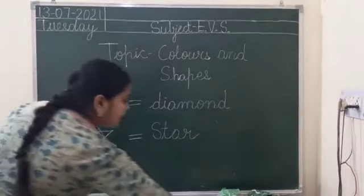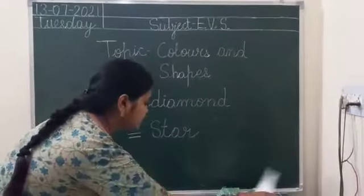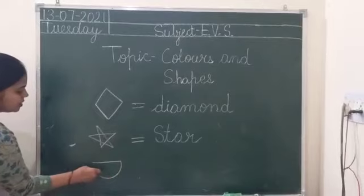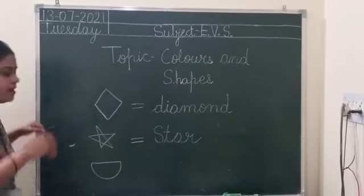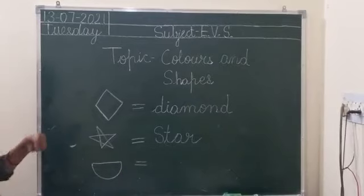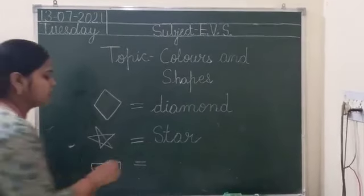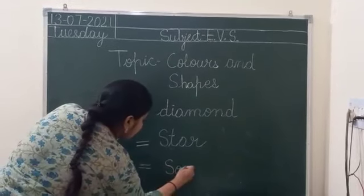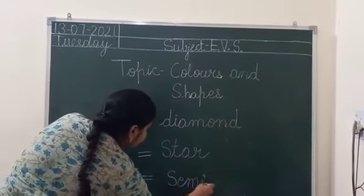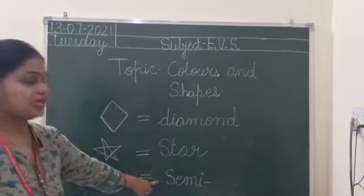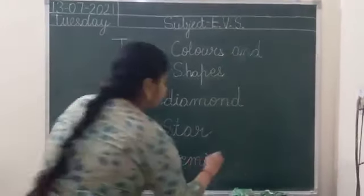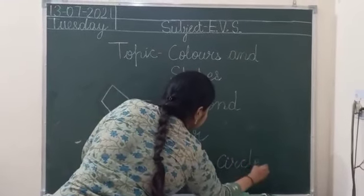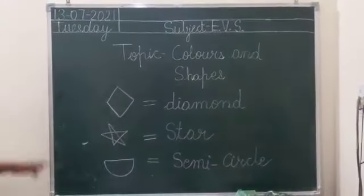And the next shape that we have learned already is semi-circle. What is semi-circle? It is the half part of the circle. We call it semi-circle. The spelling is S-E-M-I. Semi-circle.